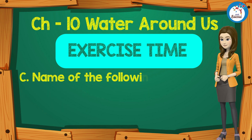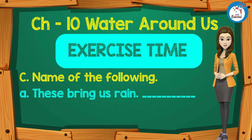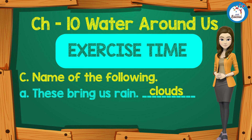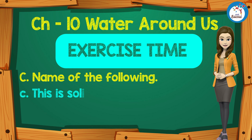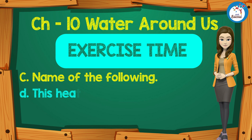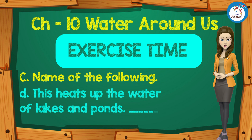Name the following. A. These bring us rain — Answer: clouds. B. Water in gaseous form is called — Answer: water vapor. C. This is the solid form of water — Answer: ice. D. This heats up the water of lakes and ponds — Answer: Sun.